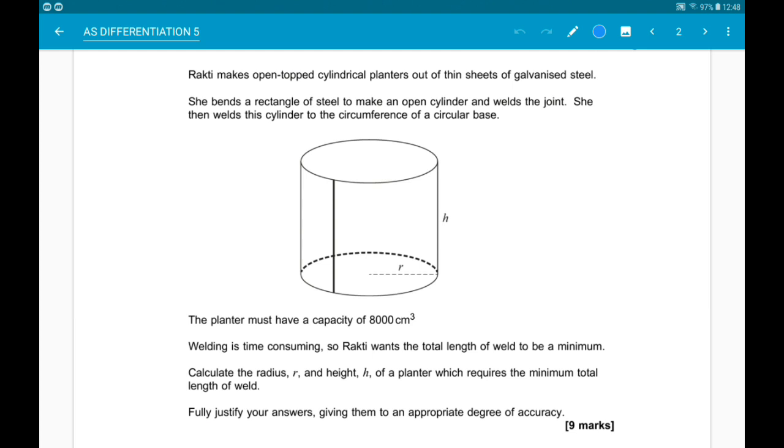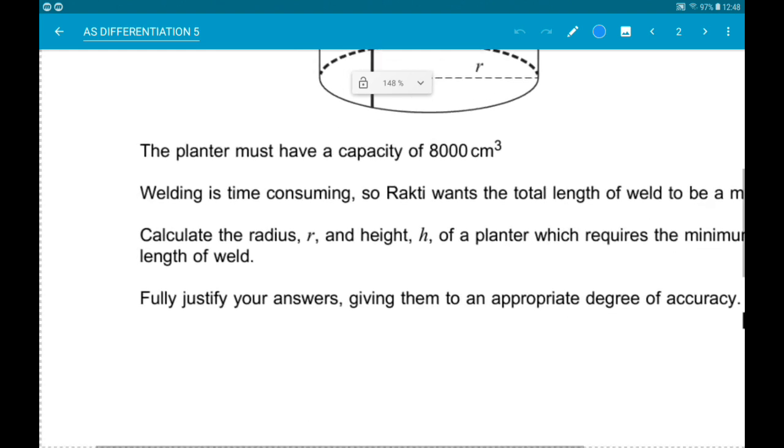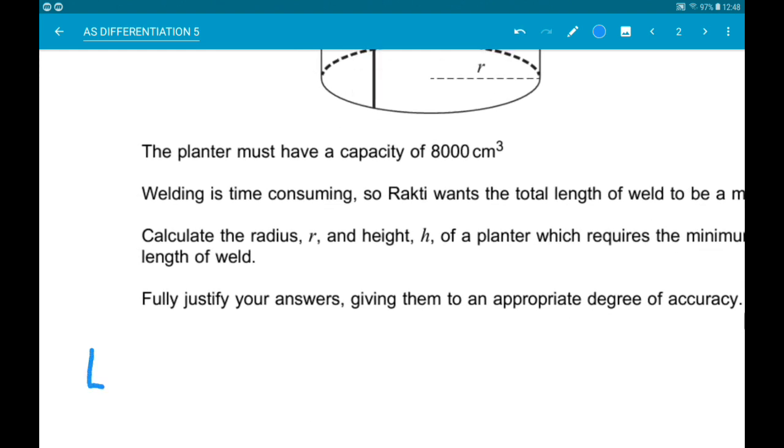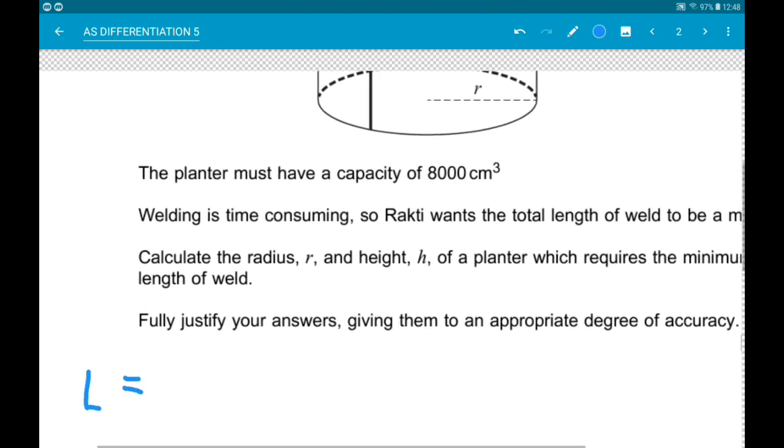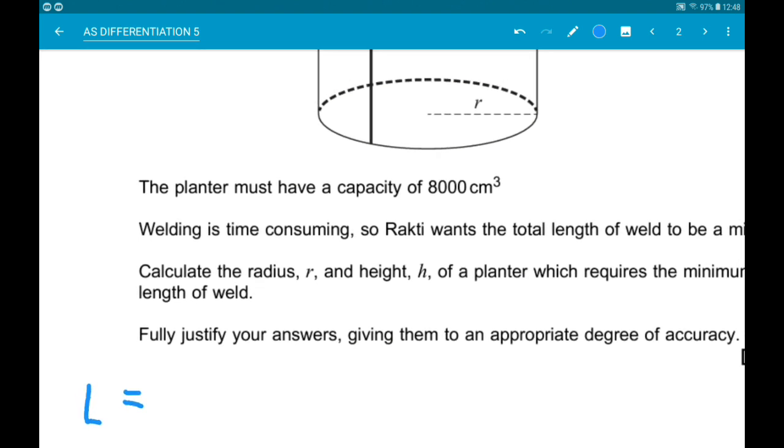First of all, let's work out an expression for the total length of weld. I'm going to call that L. Now we want to weld around the circumference of the circle, so that's pi times diameter, or 2πr. And then along the joint of the rectangle too, so that's the height of the cylinder. So this is what we want to minimize.